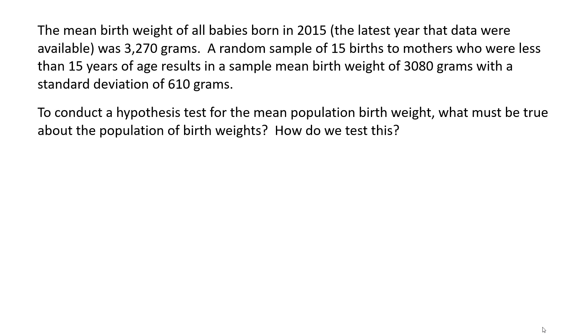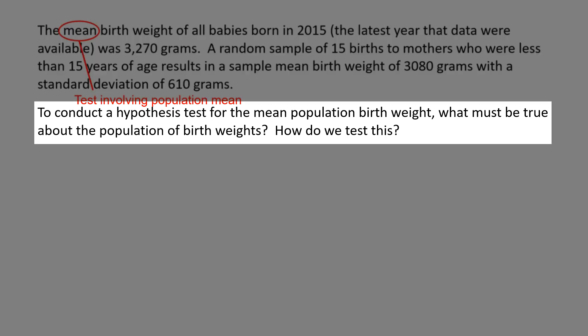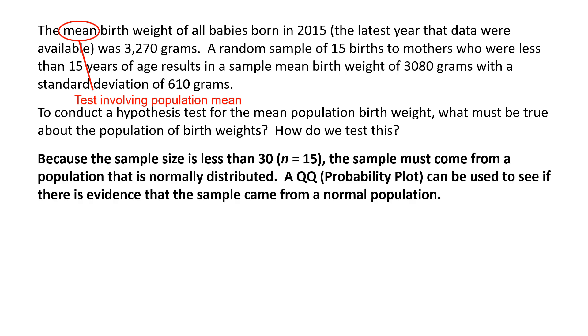When doing hypothesis tests, the first question to ask is: does this involve a population proportion or a population mean? In this case we see the word 'mean,' so this is a test involving a population mean. Because the sample size is less than 30, we must assume the sample comes from a normally distributed population — the central limit theorem requires a sample size of 30 or more for the sampling distribution to become normal. One way to check this is by using a QQ plot or probability plot.